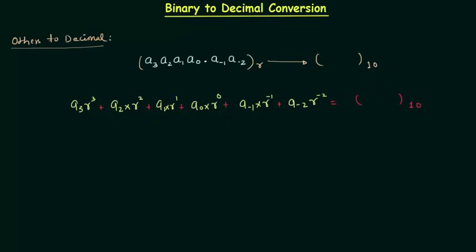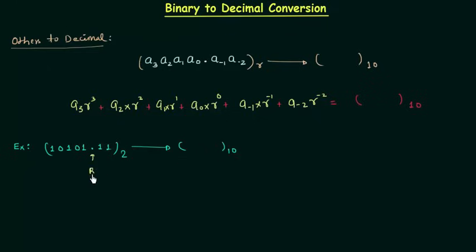We will take one example. The binary number is 10101.11. This is the binary number and we want the decimal equivalent. This is the binary point. The digit immediately to the left of the binary point has position 0, then position 1, 2, 3, 4 going left. The fractional digits have position minus 1 and minus 2.